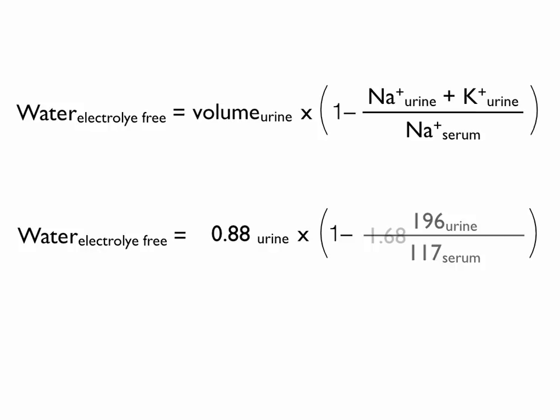If you actually run through the calculation, what happens is that this multiplier becomes a negative number. So that means 880 cc's of urine actually generates negative 590 cc's of electrolyte-free water.